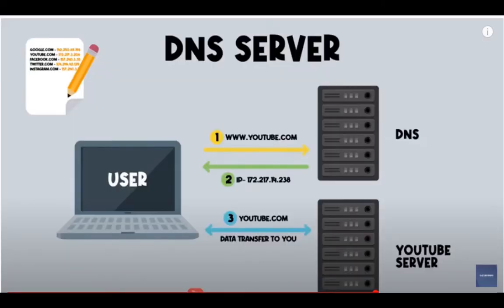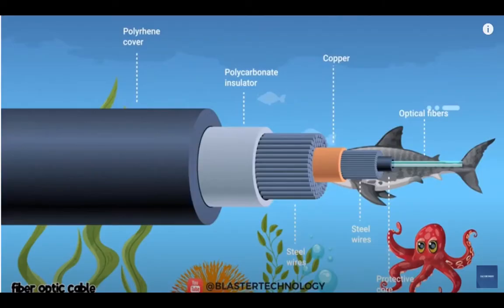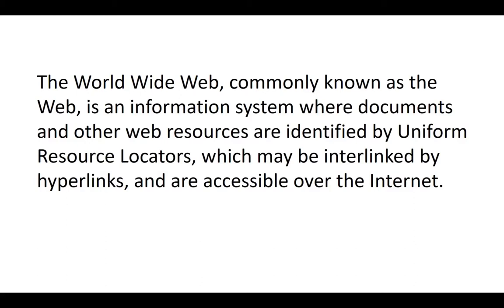This is another great diagram showing how it works. First, you send www.youtube.com to the DNS. The DNS checks it and says: 'Okay, this is the IP address of YouTube's server,' then sends it back to your system. Your system is then able to locate the server of youtube.com and transfer the data you need back to your system — and all this happens in less than a second. This is also a diagram showing how the optical cable looks.